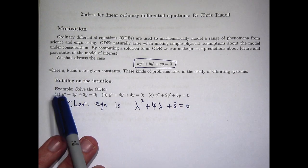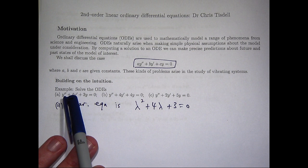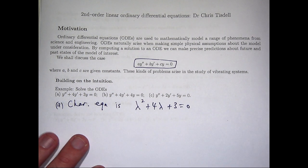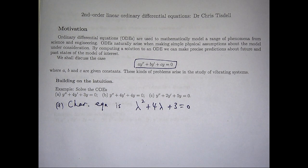So all I do is take the coefficients 1, positive 4, and positive 3, and write them as some sort of quadratic equation. So what I can do now is solve this quadratic equation, analyze the roots, and then form a general solution based on the format of those roots.